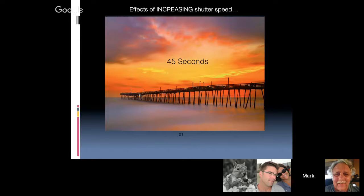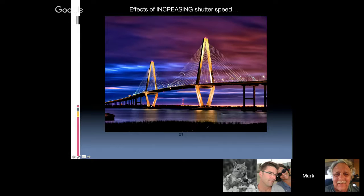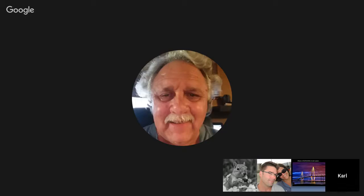Next shot — the Ravenel Bridge in Charleston, South Carolina, with unusual colors. Those colors come from the bridge and city lights during the long exposure bouncing off low clouds. Guess: 60 seconds — correct.